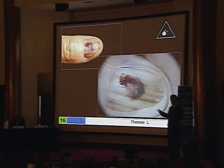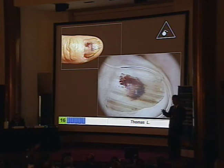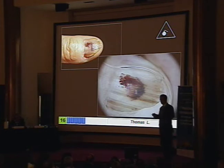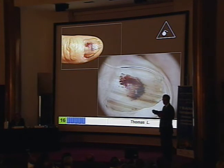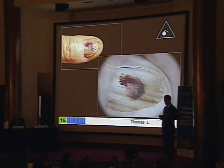Polarizing light dermoscopy is not very efficient for looking at the nail. It's much better with immersion, and when you use immersion, you need a jellified solution because water is not sufficient.